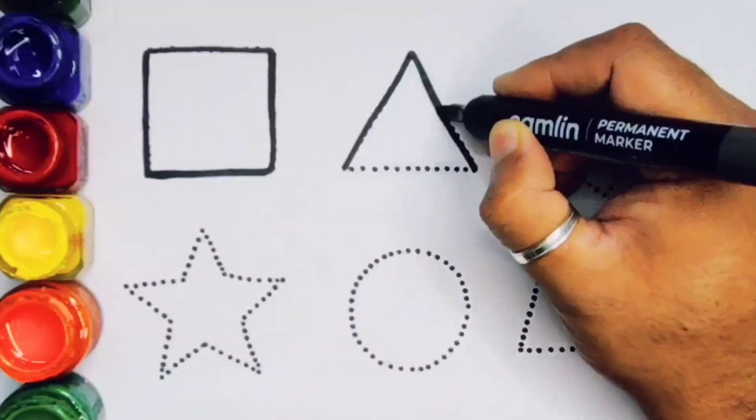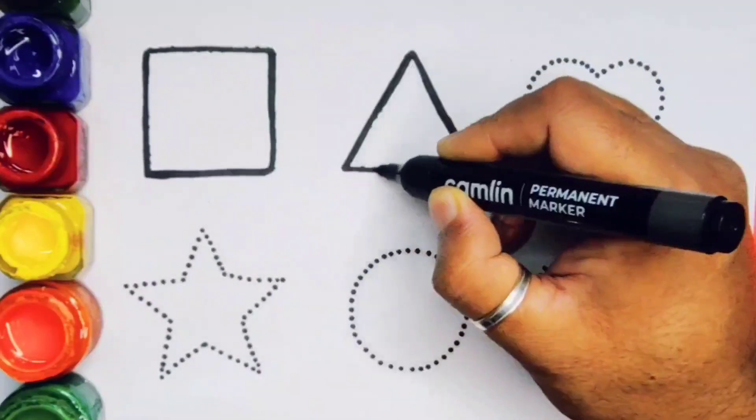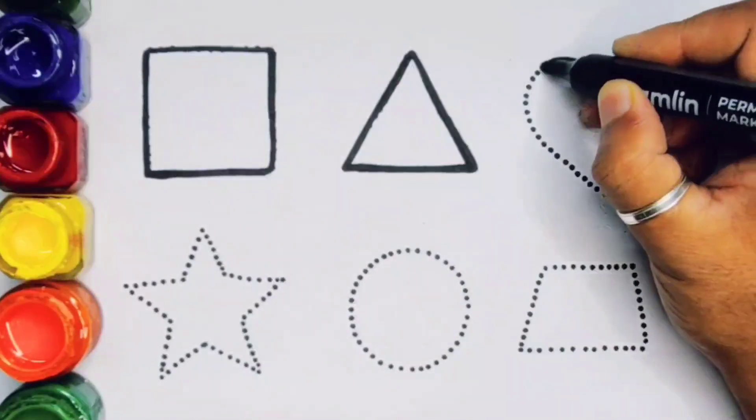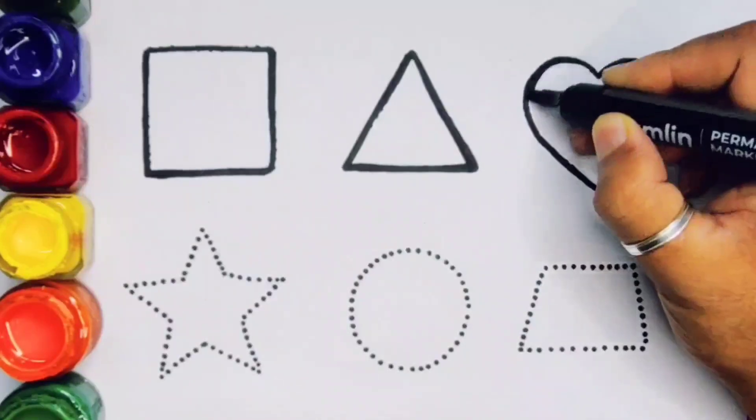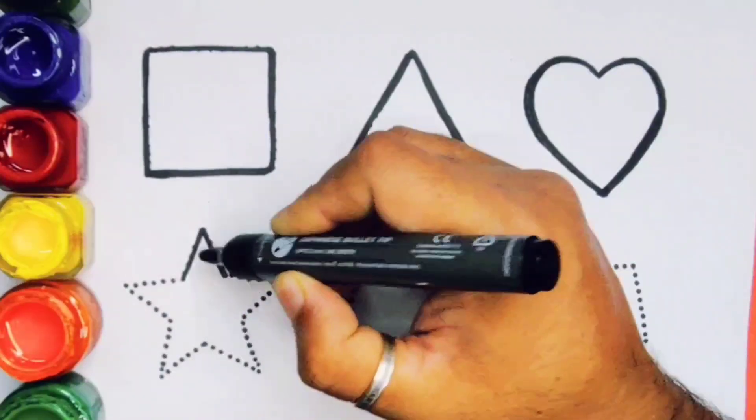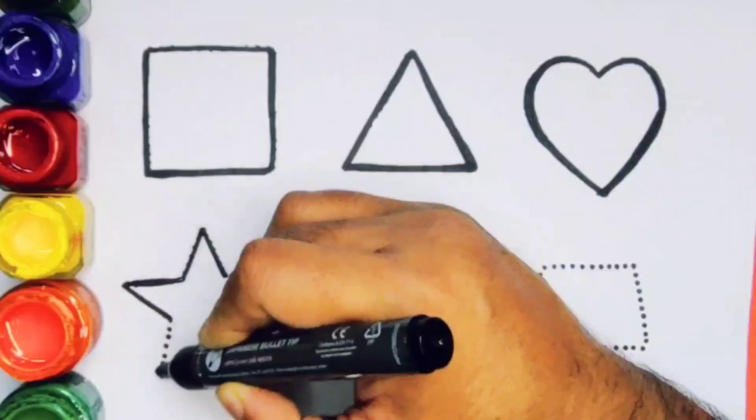Now triangle. Triangle. Heart. Heart. Star. This is star.